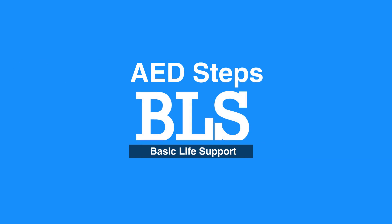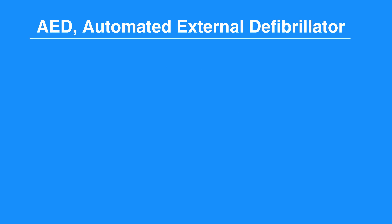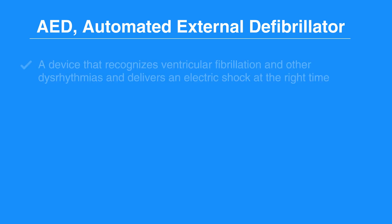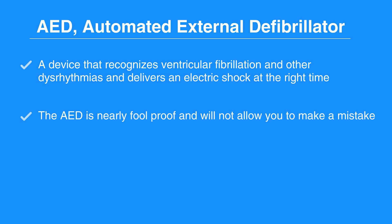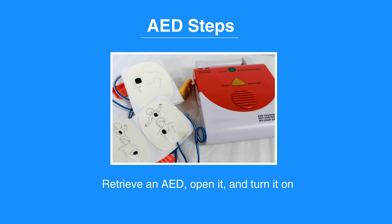Chapter 3: Use of AED. Welcome to the AED steps. In this video, we will discuss the use of an AED and how it works. An AED, or Automated External Defibrillator, is a device that recognizes ventricular fibrillation and other dysrhythmias and delivers an electronic shock at the right time. The AED is nearly foolproof and will not allow you to make a mistake. It is safe for anyone to use. Now, let's review the AED steps.